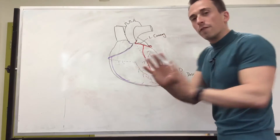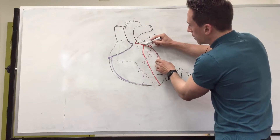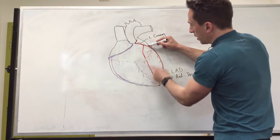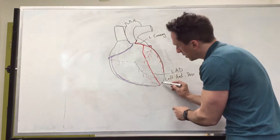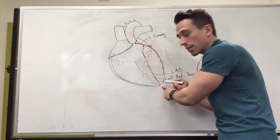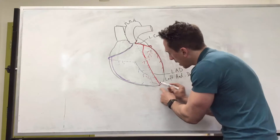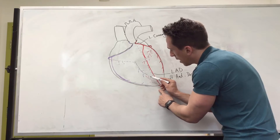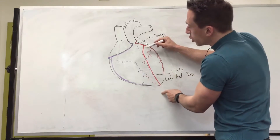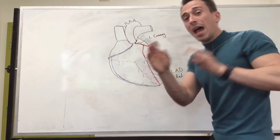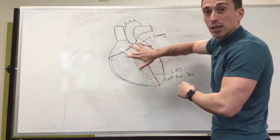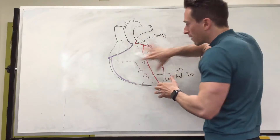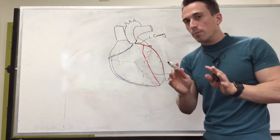The LAD goes all the way down to the apex of the heart and then moves behind the heart, feeding the majority of the interventricular septum and the majority of the left-hand side — the left atrium and left ventricle musculature. So the LAD is very important.